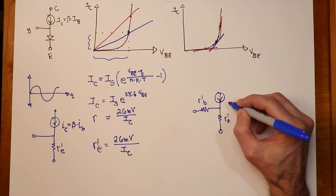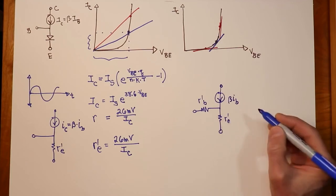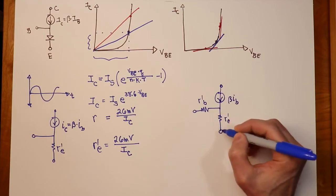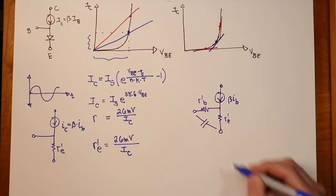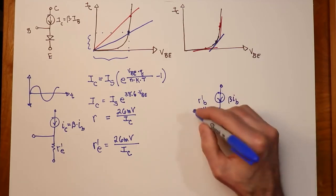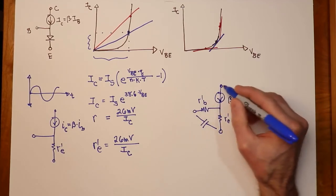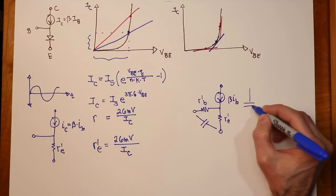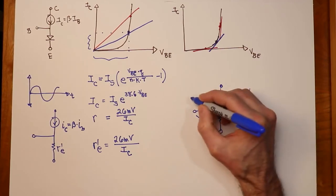Alright, so here's our beta IB again. So there is a junction capacitance that we would be interested in. In other words, you could imagine sort of a small capacitance probably in the picofarads, modest picofarads across here. There is another capacitance associated with the collector to emitter from the collector to the base.